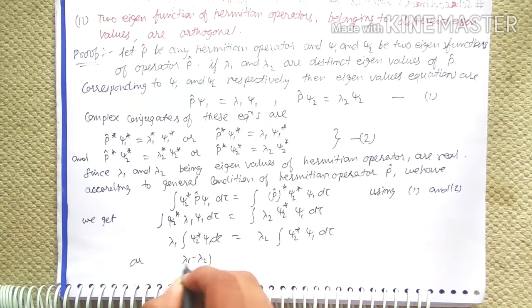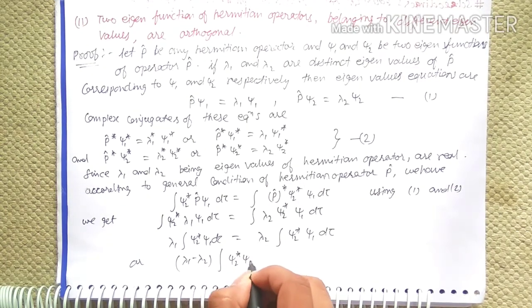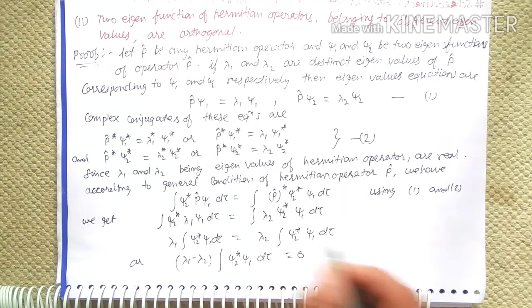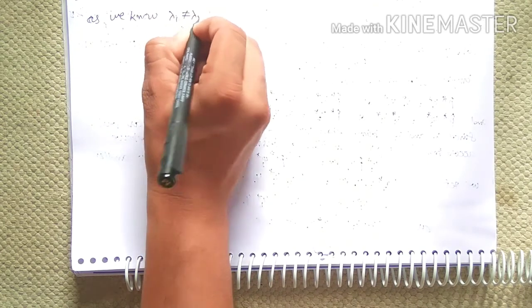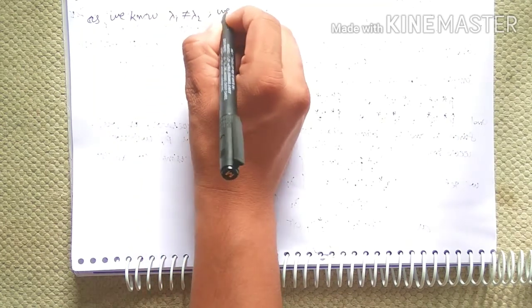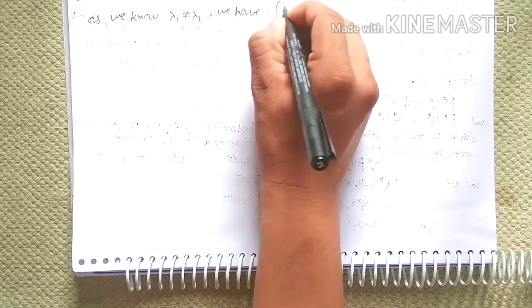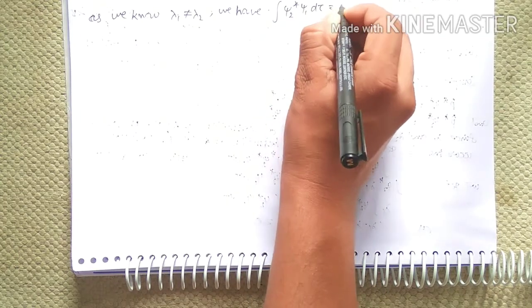(Lambda-1 minus lambda-2) times integration of chi-2* chi-1 d-tau equals zero. Since we know lambda-1 is not equal to lambda-2, we must have: integration of chi-2* chi-1 d-tau equals zero.